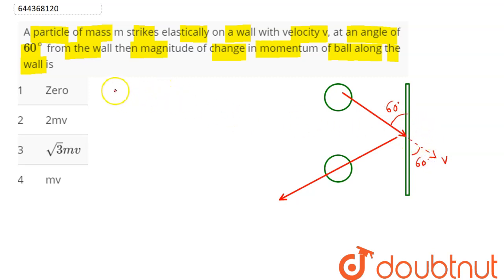Hence the change in momentum here can be written as final momentum minus initial momentum. That is M into VF minus M into VI vector.